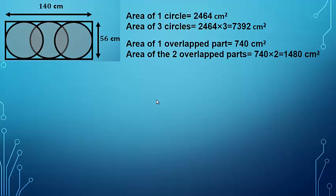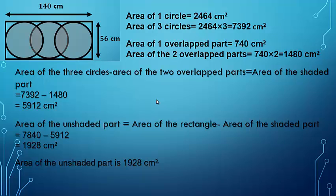The area of one overlap part is 740 centimeter square, so the area of two overlap parts is 1480 centimeter square. Subtracting the two overlap parts from the area of three circles gives 5912 centimeter square — this is the shaded area. To find the area of the unshaded part, we subtract: 7840 − 5912 = 1928 centimeter square. So the area of the unshaded part is 1928 centimeter square.